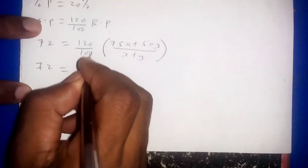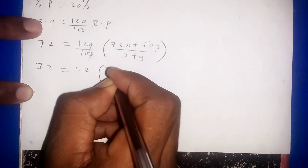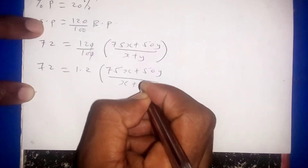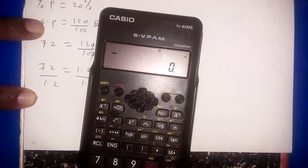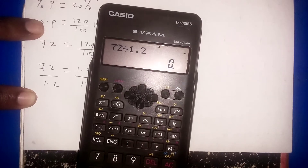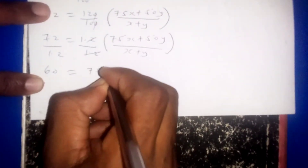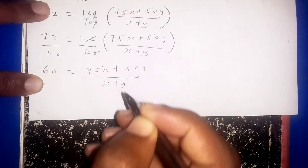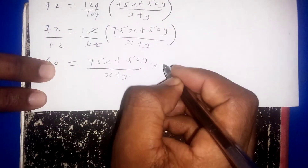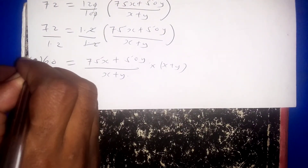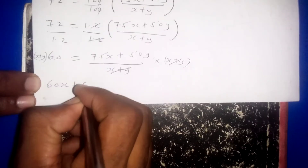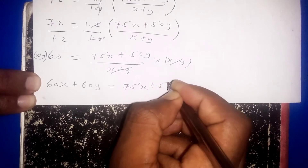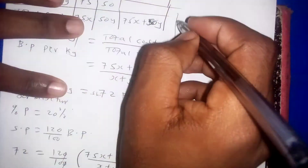Dividing both sides by 1.2: 72/1.2 = 60, so 60 = (75x + 50y)/(x + y). Multiplying both sides by (x + y) to eliminate the fraction gives 60x + 60y = 75x + 50y.